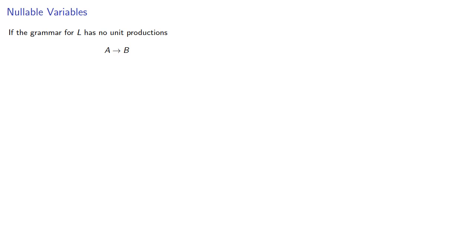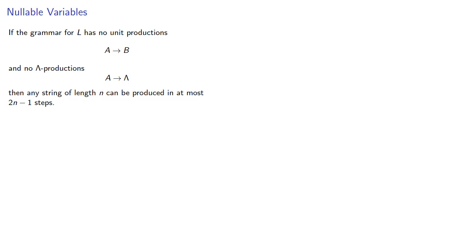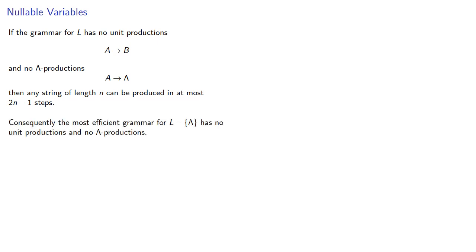If the grammar for a language has no unit productions and no lambda productions, then any string of length n can be produced in at most 2n-1 steps. Consequently, the most efficient grammar for L minus lambda has no unit productions and no lambda productions.